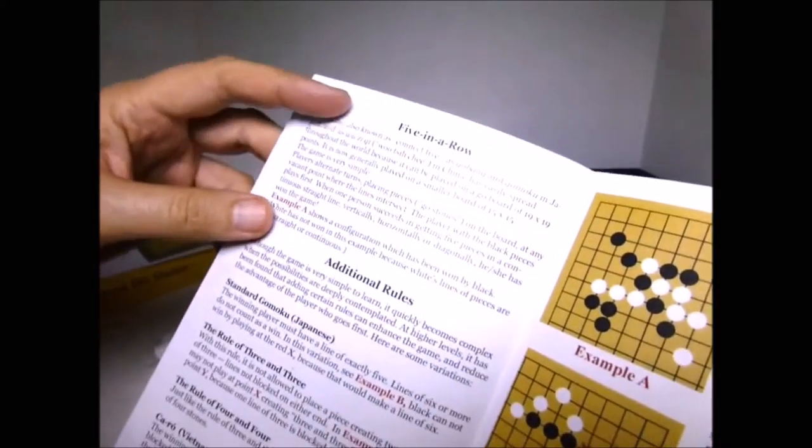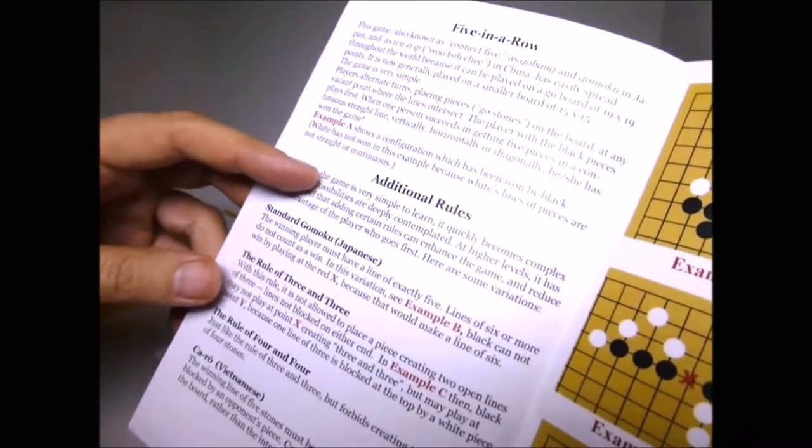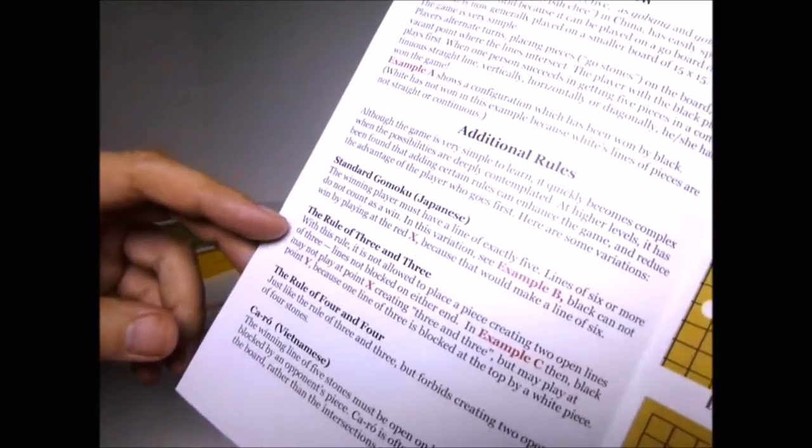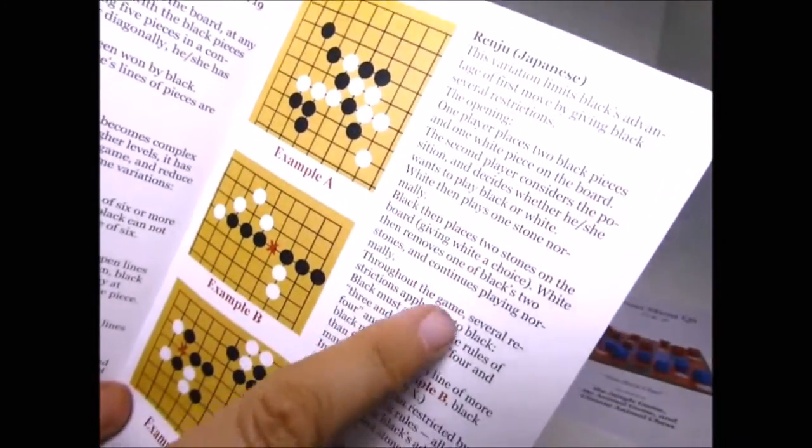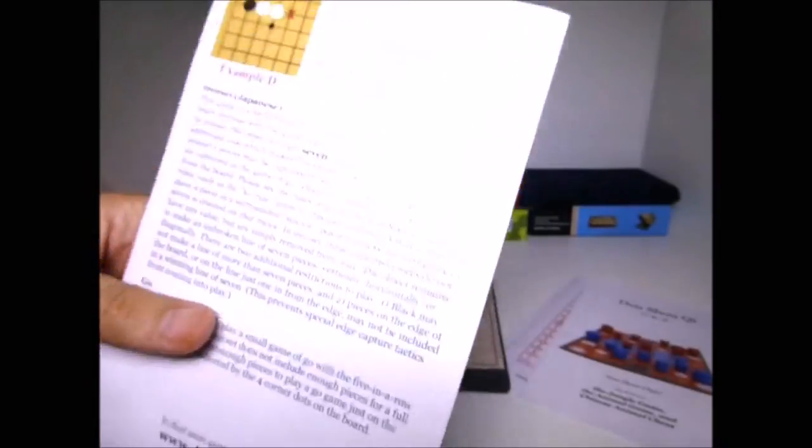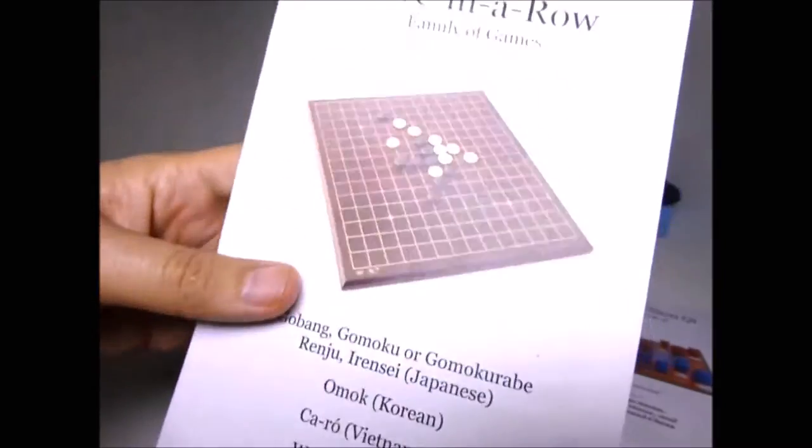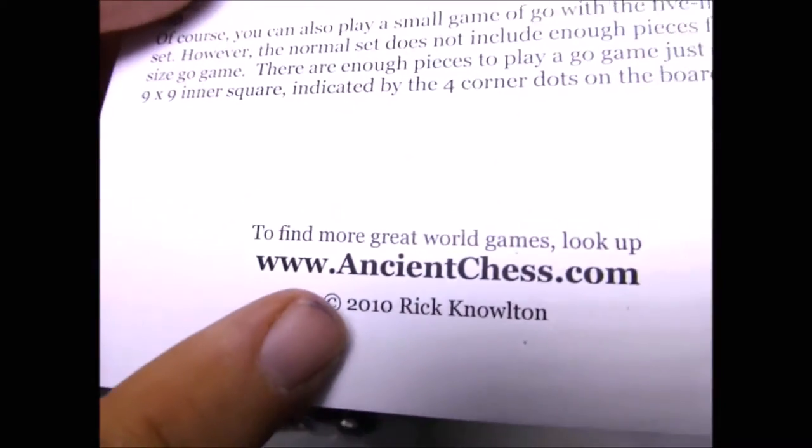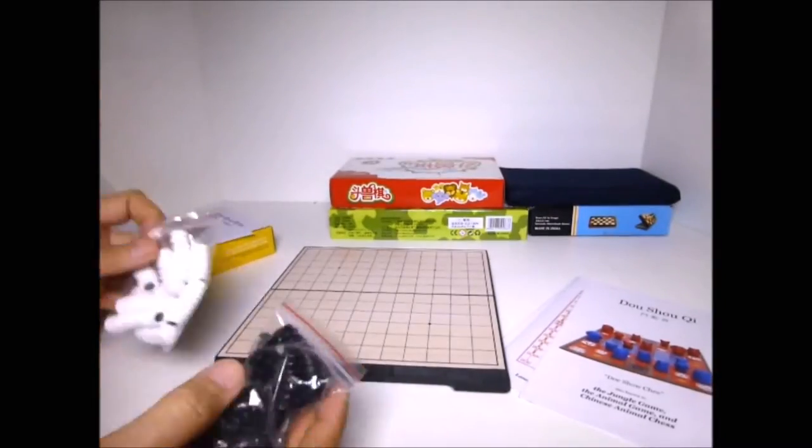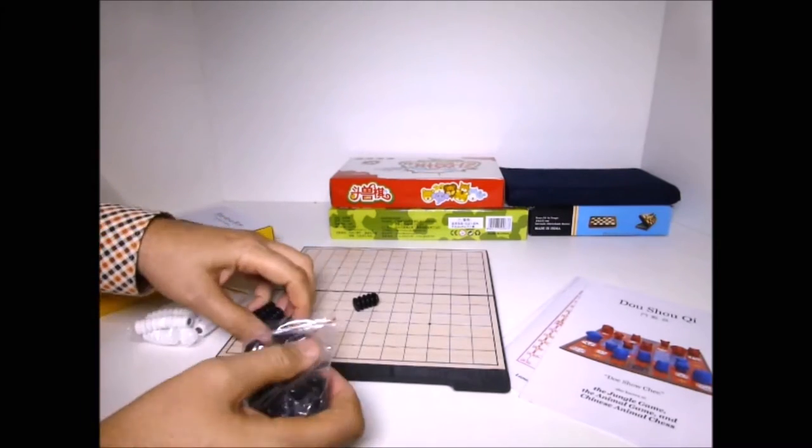This is the other game that comes with it. You can play this game, various versions of five in a row with this set. So all the different versions of that, Pente, Irince, Gobang, there are many variations, but the principle is very simple. You try to make a line of five pieces in a row.